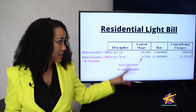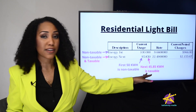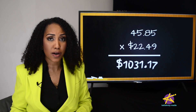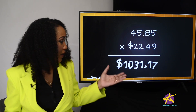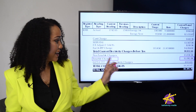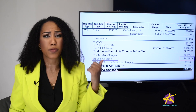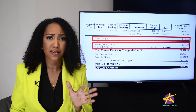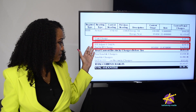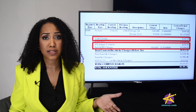You take out the first 50, which is not taxed, and that leaves you with 45.85 kilowatt hours — the portion they're going to tax you on. You multiply that by the rate of $22.49 per kilowatt hour, and you get $1,031.17. Now, this is where I got lost initially, because the taxable charges on the bill are actually $2,092.08 — but we just got $1,000 and change. I tried adding other items like the customer charge, the foreign exchange adjustment, and the fuel and IPP charge, and it still wasn't adding up to $2,092.08.